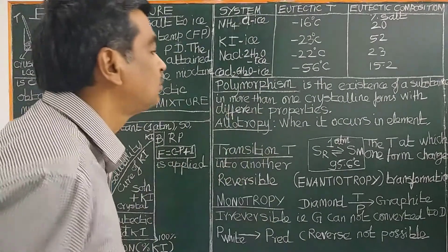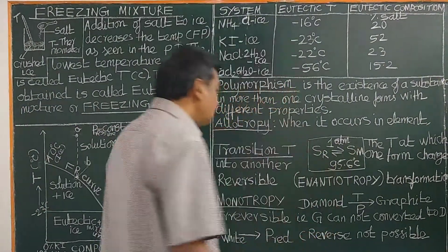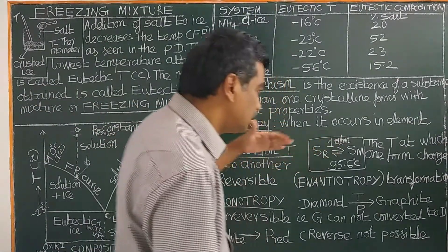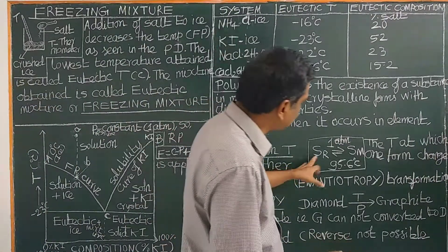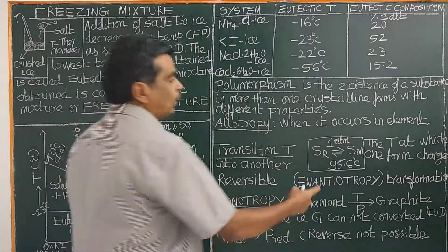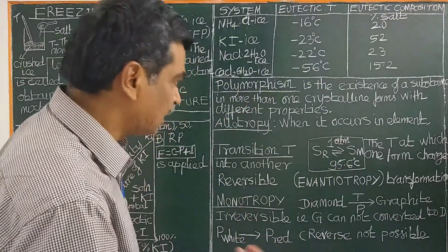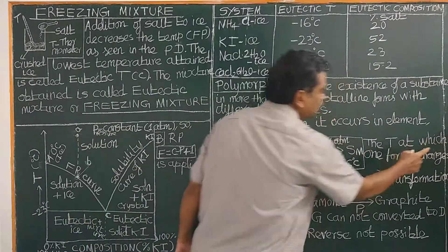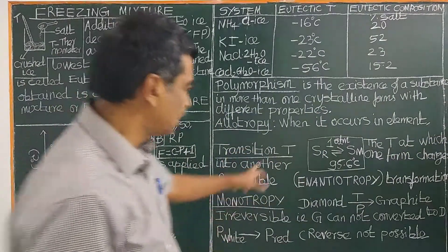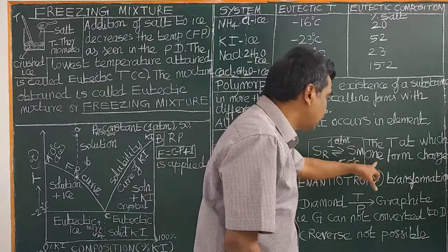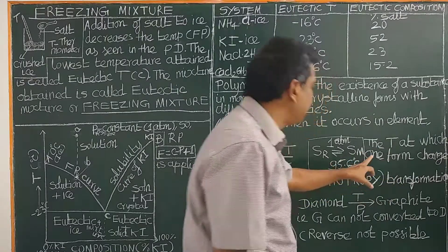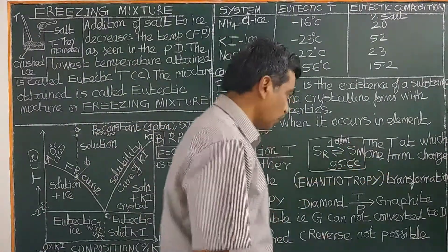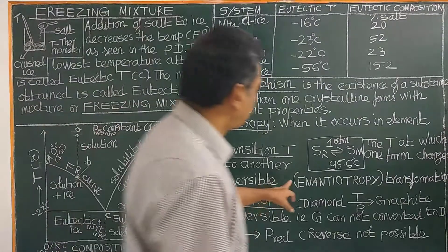The allotropic forms of sulfur are rhombic sulfur and monoclinic sulfur. What is the transition temperature? At a certain temperature, sulfur rhombic is converted into sulfur monoclinic. The temperature at which one crystalline form changes into another crystalline form — sulfur rhombic converts to sulfur monoclinic at 95.8 degrees Celsius — is called the transition temperature.